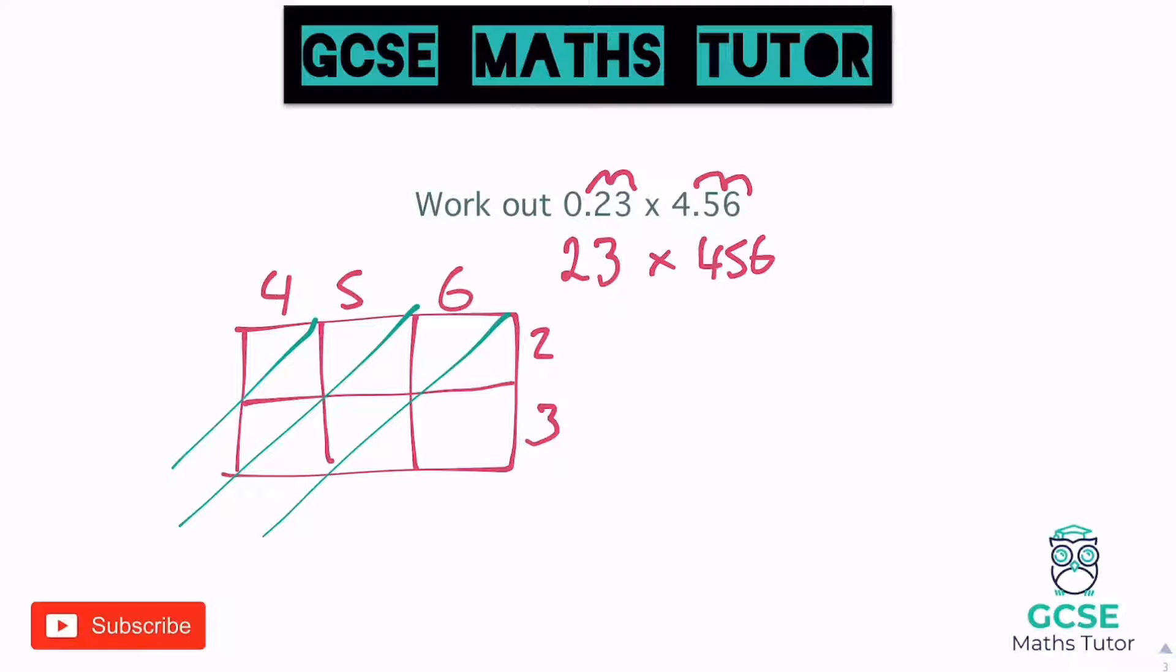So 4 times 2 is 8. 5 times 2 is 10. 6 times 2 is 12. And to the bottom row. 4 times 3 is 12. 5 times 3 is 15. And 6 times 3 is 18. Okay, so adding these all up from right to left, we've got 8. We've got 5, 6, 7, 8 again. 1, 2, 3, 4, 8, 9, 10. So 0, carry the 1, and then 0 and 1 makes 1. So read them there from left to right. 1, 0, 4, 8, 8. 10488.